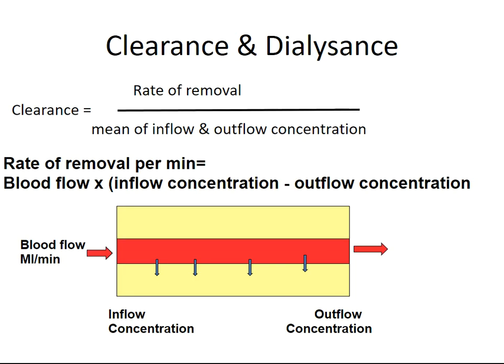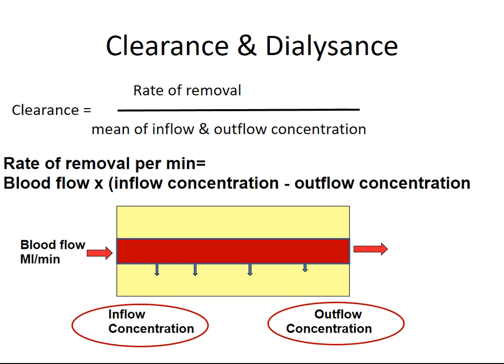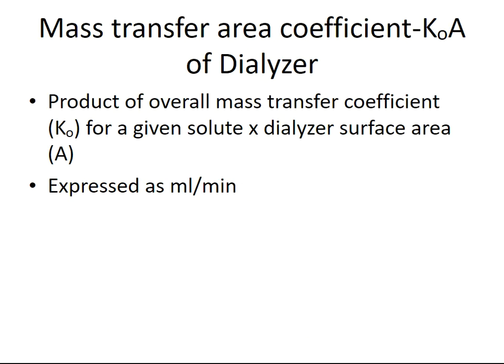Clearance equals the rate of removal divided by the mean of inflow and outflow concentration. Rate of removal per minute equals blood flow multiplied by the inflow concentration minus the outflow concentration. The difference between inflow and outflow concentration of a given solute reflects the overall mass transfer coefficient. The mass transfer area coefficient KoA is the product of the overall mass transfer coefficient Ko for a given solute multiplied by the dialyzer surface area, expressed in mL/min.